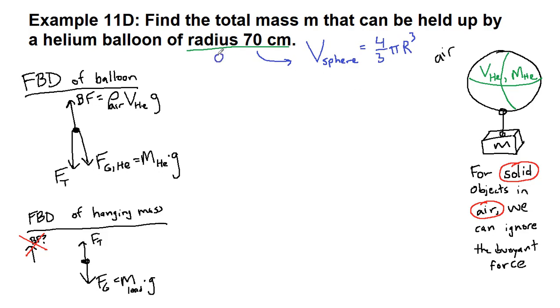And so this radius, 70 centimeters, is 0.7 meters. This radius tells us the volume of helium that we have. We have four-thirds times pi times 0.7. And just the 0.7 is cubed. And we can plug all of that into our calculator.